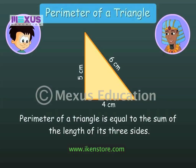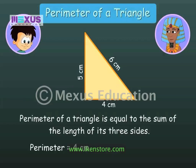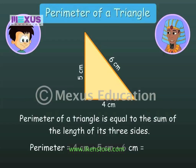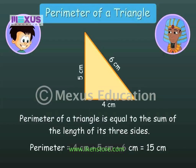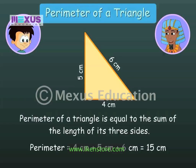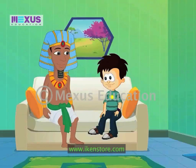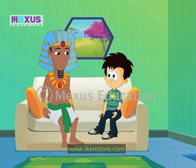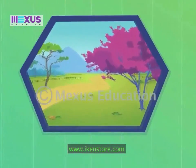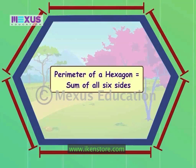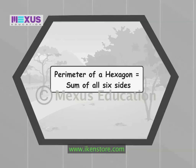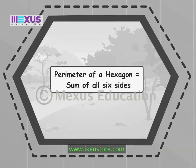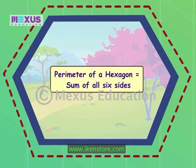Yes! The perimeter of this triangle would be four centimeters plus five centimeters plus six centimeters — that is fifteen centimeters! Very good! Wow, Horace, that was great! Now, can I find the perimeter of any shape? Yes, you can! Just add together the lengths of all the sides of that shape and you'll have the perimeter. So the perimeter of this poster with six sides will be the length of all six of its sides added together. This poster has six sides — that means it is a hexagon. Its perimeter will be the length of all its sides added together.